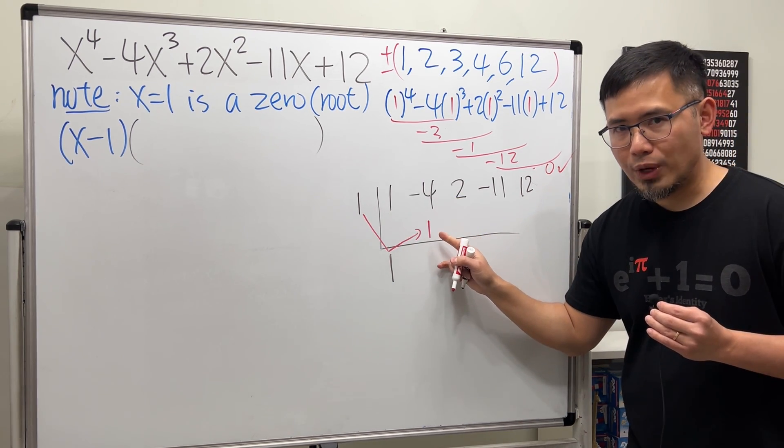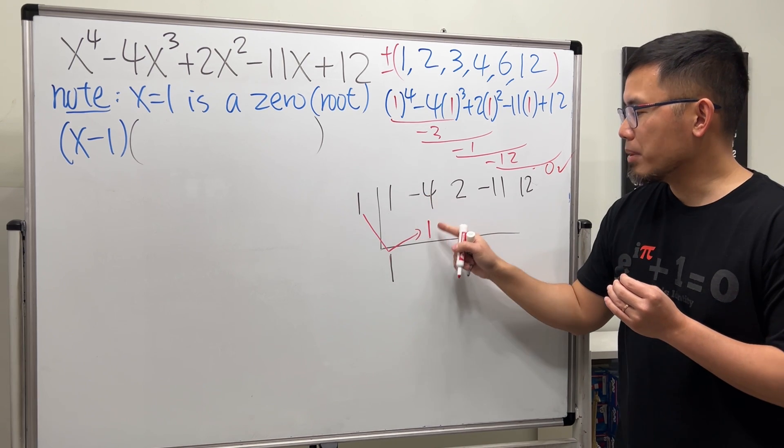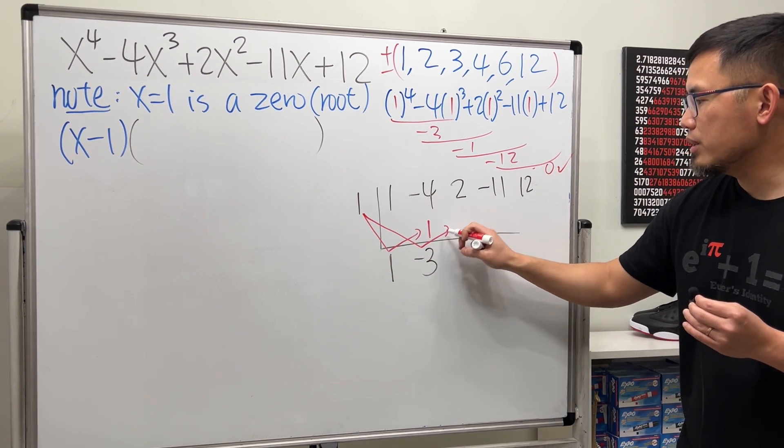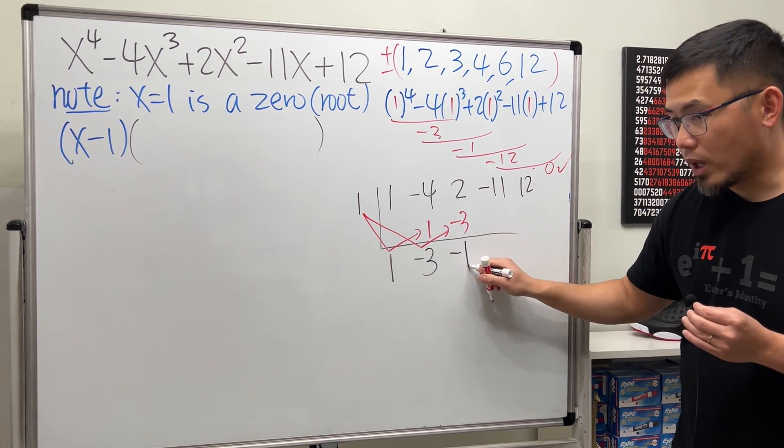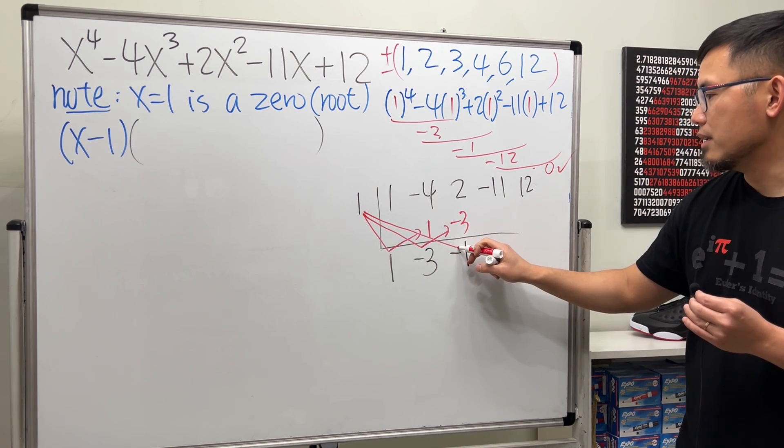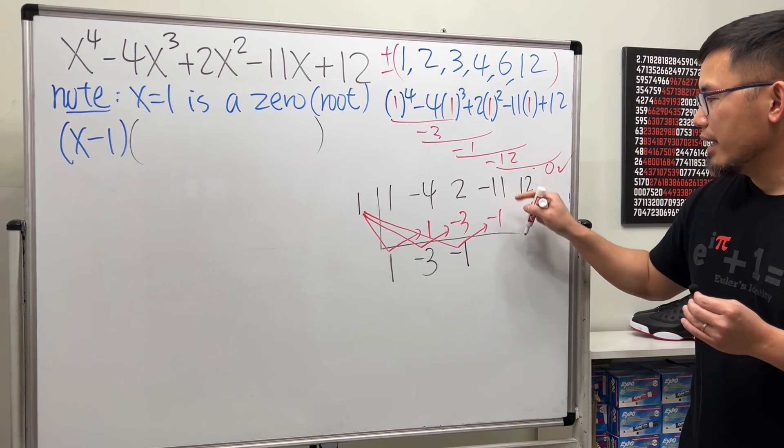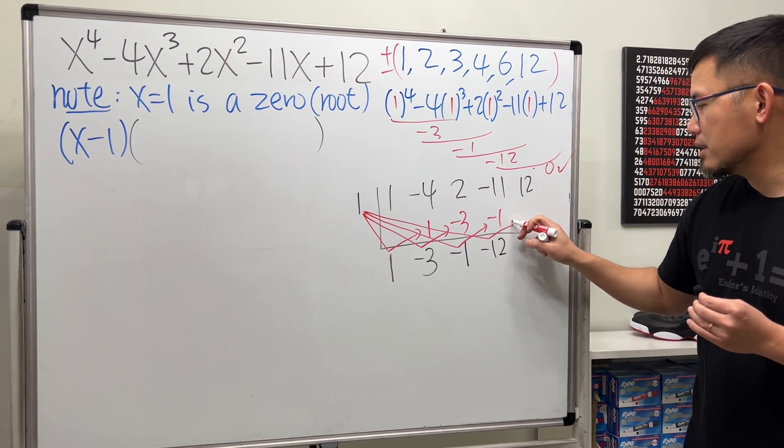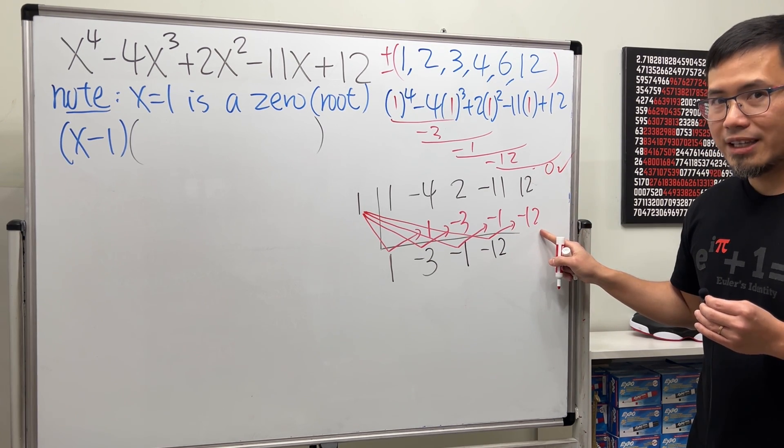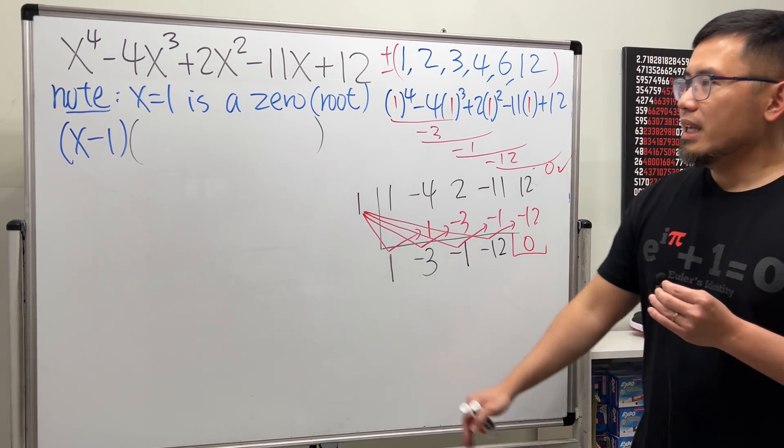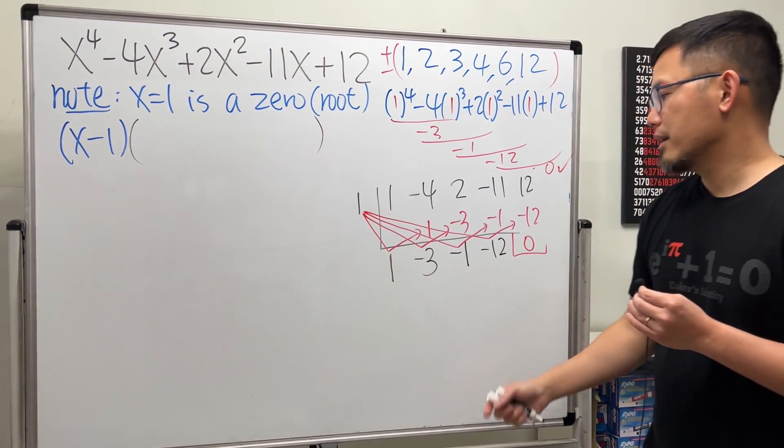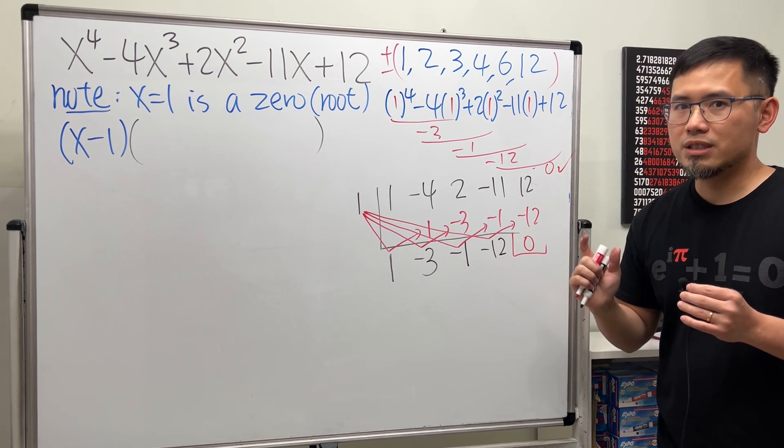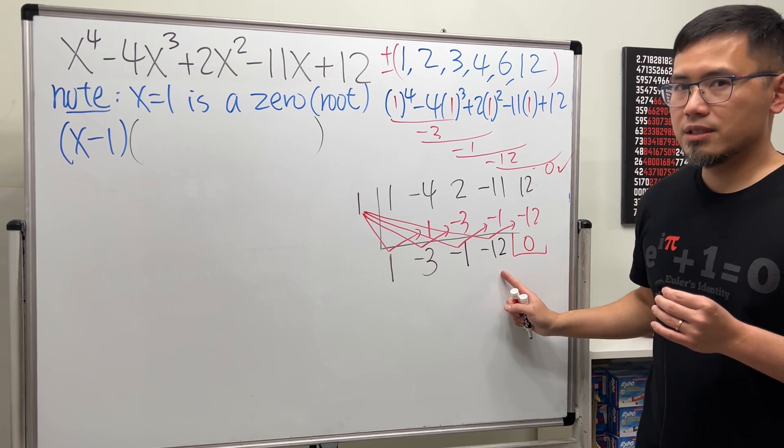And then we are going to just do this 1 times this 1 and then put it here. All right, 1 times 1 is 1, you put it here, and then we are going to add them up. Negative 4 plus 1 is negative 3. And then continue, 1 times negative 3 is negative 3. 1 times negative 1 is negative 1, and then this and that is negative 12. Lastly, 1 times negative 12 is negative 12. When we add them up we get zero.